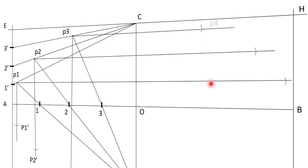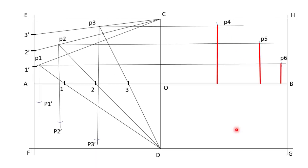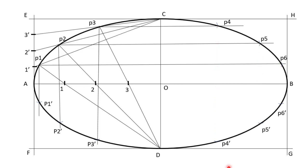Let's name these new points P4, P5, P6. Finally, only one quarter remains where we need to plot points, and this time we use points P4, P5 and P6. We repeat the same procedure of transferring distances using symmetry about the major axis — transferring from top to bottom — to get the remaining points, calling them P4', P5' and P6'. Now we have all the points, and it's time to connect them all with a smooth curve. Once we connect all these points with a smooth curve, we get the ellipse.